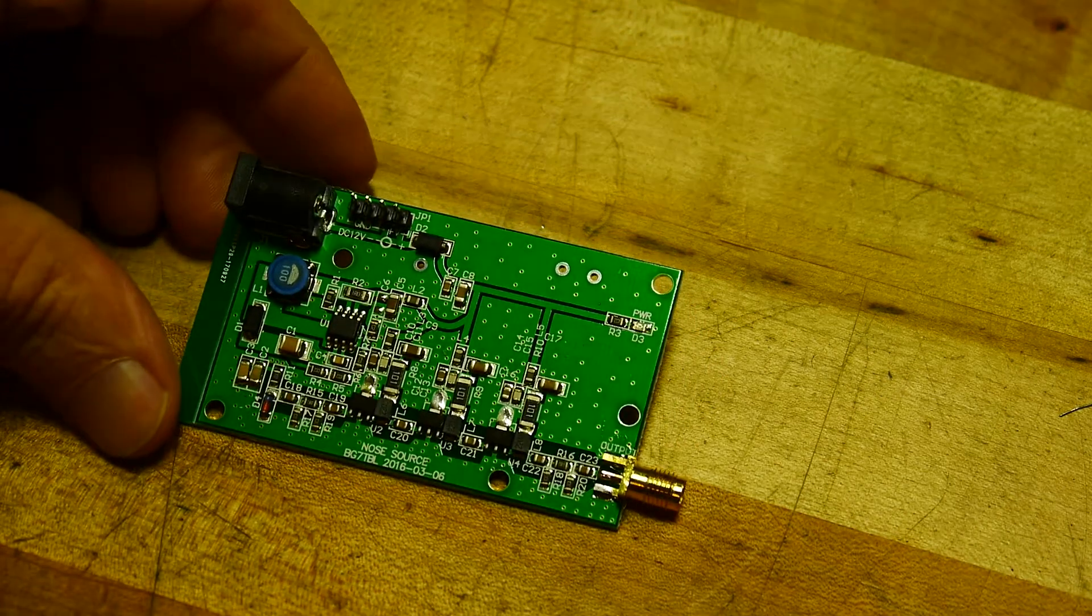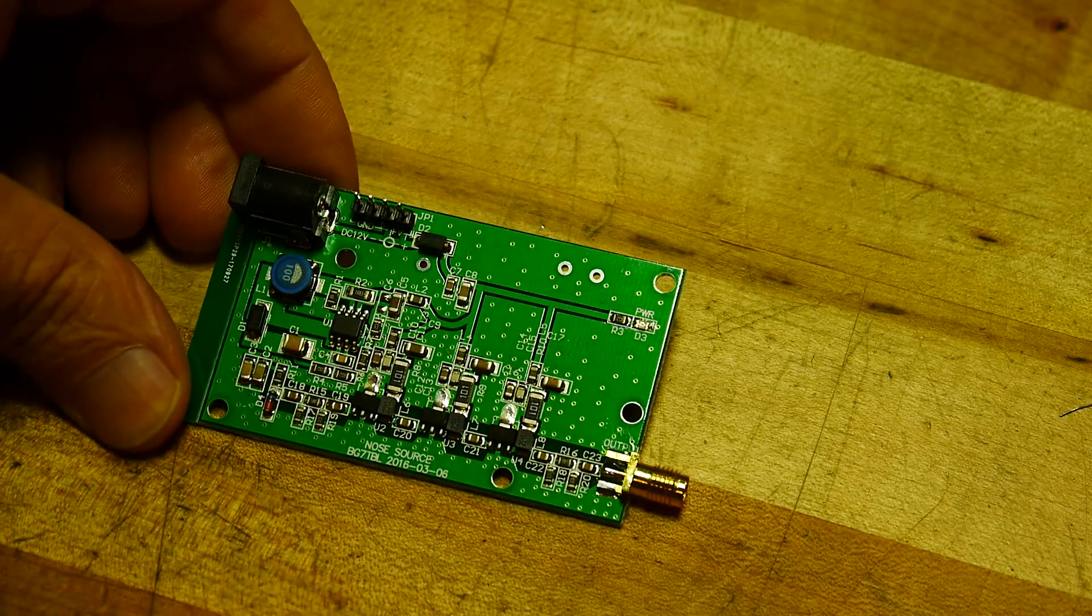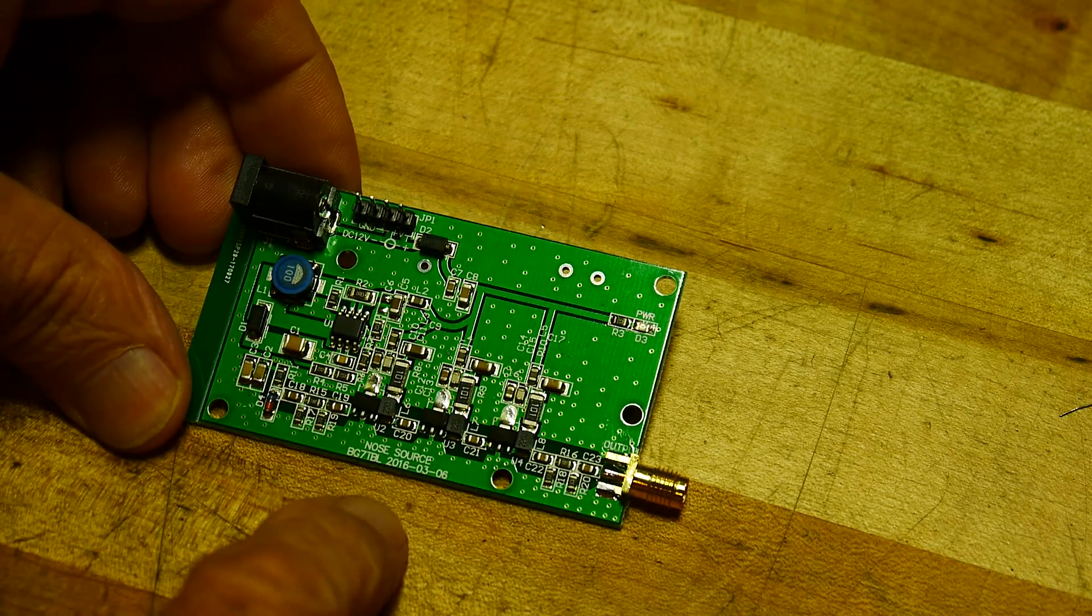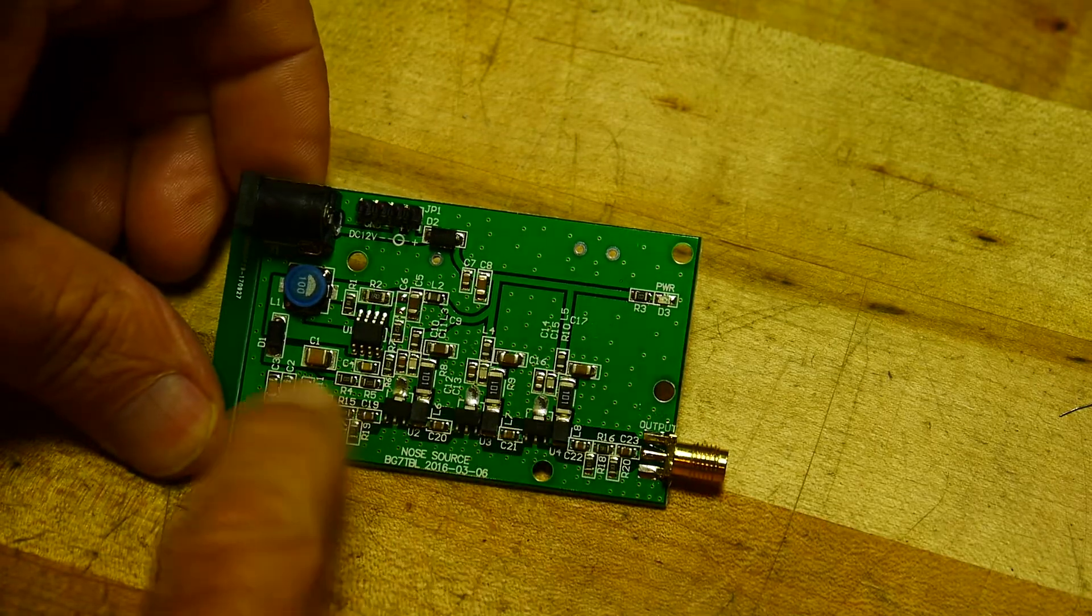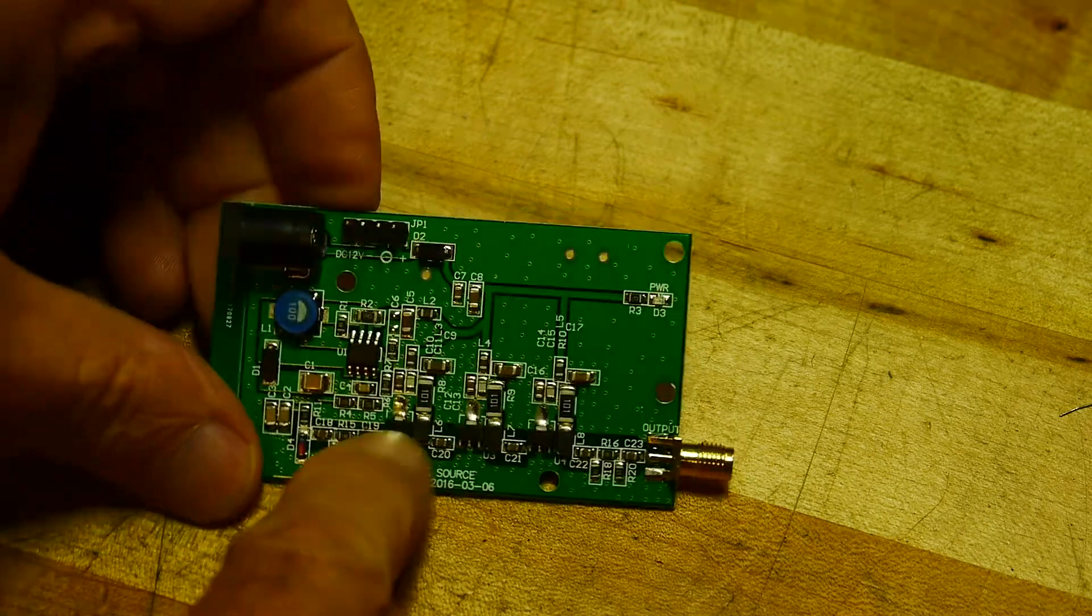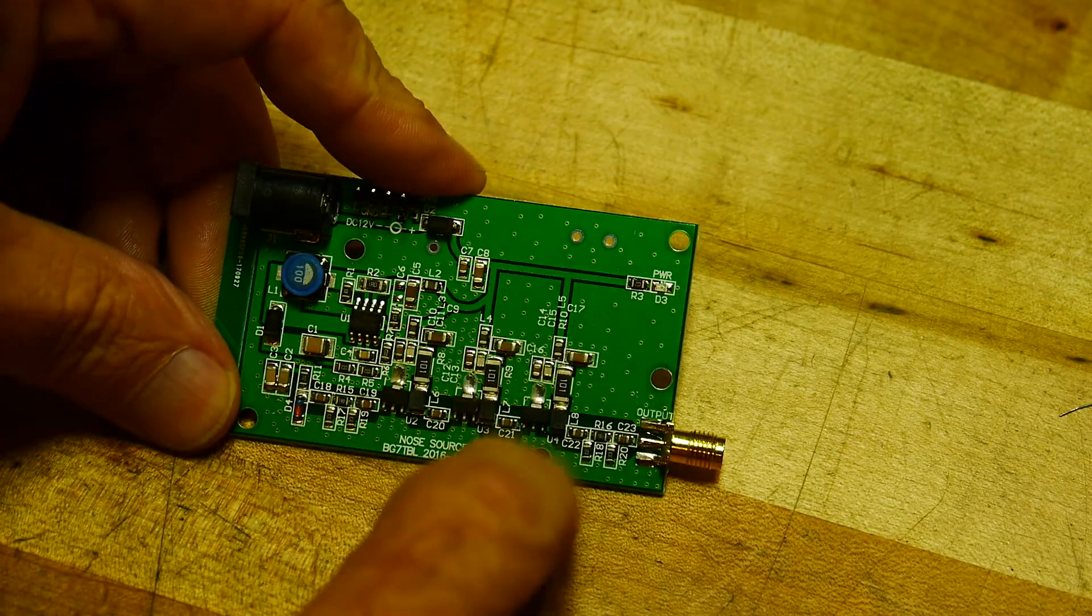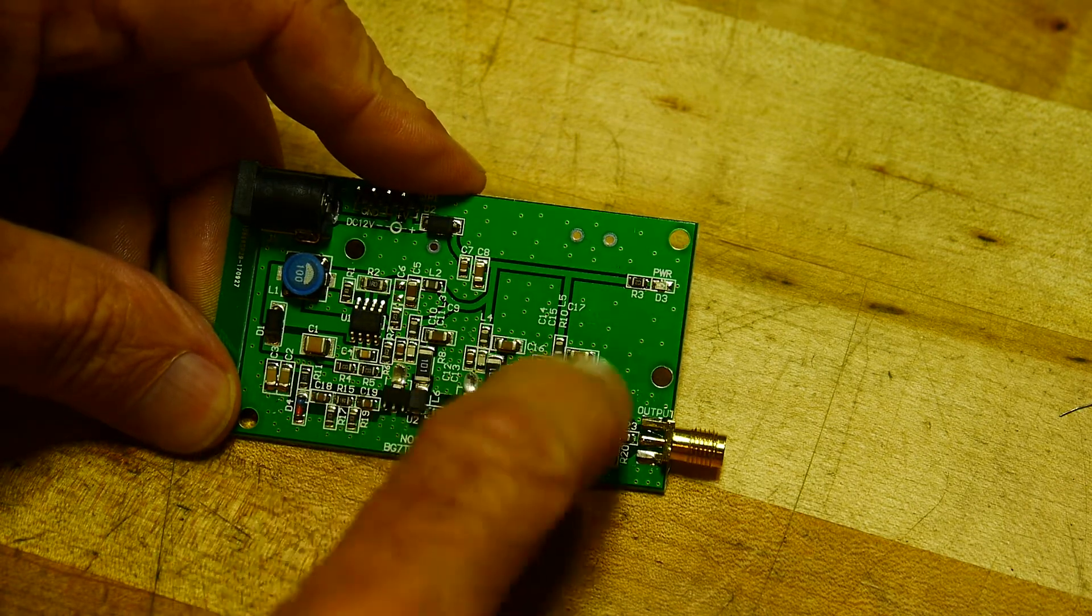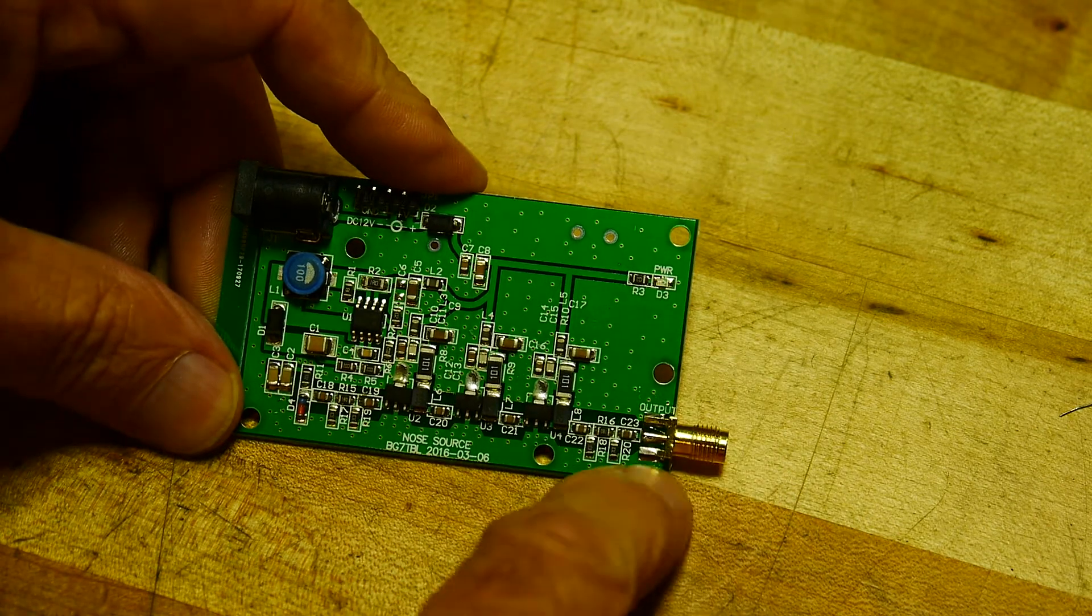I bought this off of eBay. I've never owned one of these before, it seems to work okay. This is a noise source, and the way these work is you can kind of see the topology here. There's three transistors here, and they all feed into one another. They're amplifiers, taking a very small signal and amplifying it once, amplifying it twice, amplifying it three times, and then sending it out onto the SMA connector.